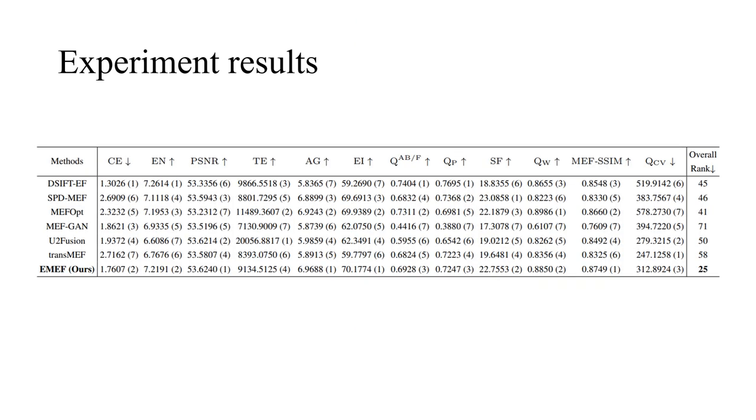The existing MEF methods are capable to achieve good performance on their preference metrics. Due to the extreme pursuit of these metrics, they usually show poor scores on the remaining metrics. The overall rank is the sum of ranks on all metrics which can reveal overall performance. We integrate four distinctive methods in EMEF so that they compensate each other. Thus our method has a relatively all-round ability on all metrics, ultimately presenting balanced and optimal overall performance.